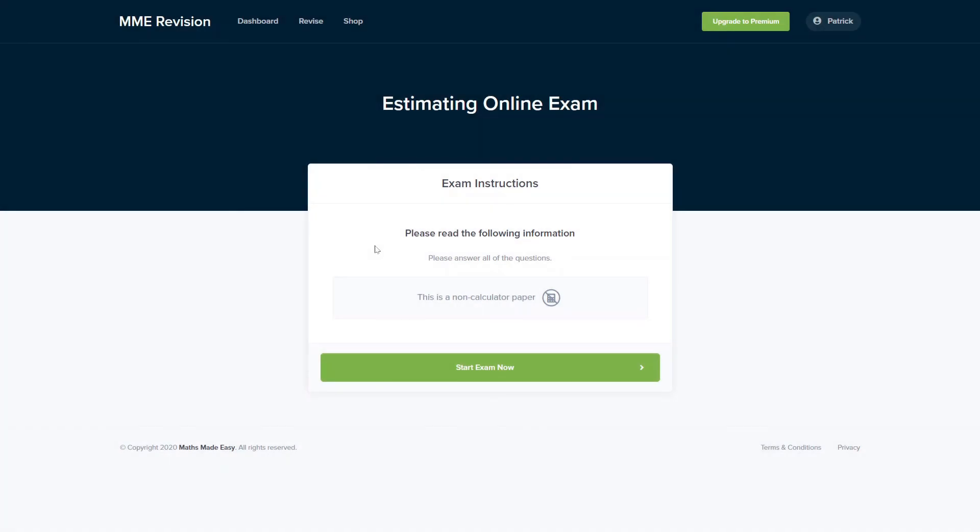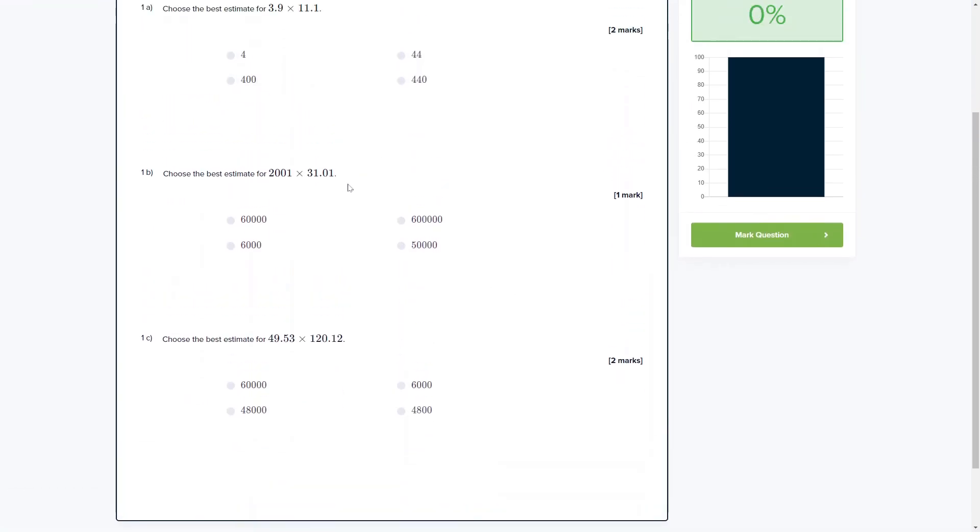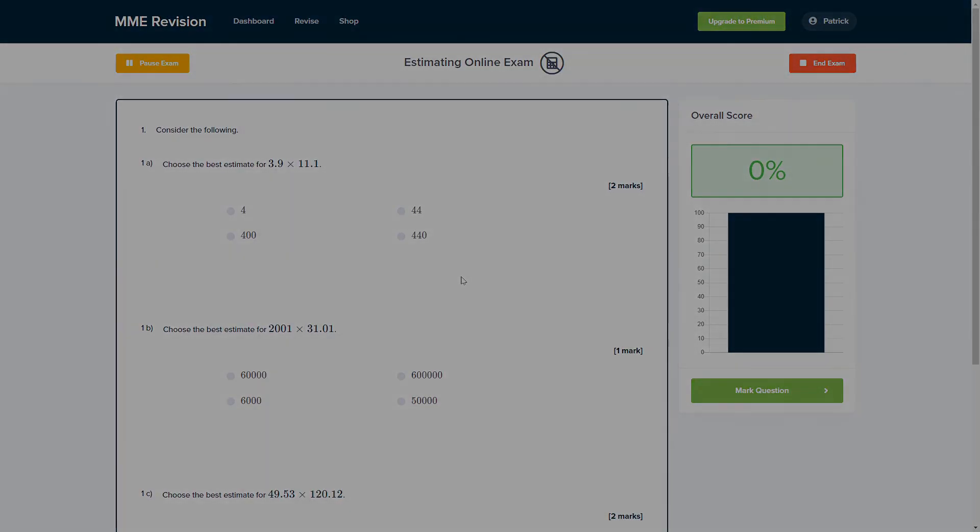If you're feeling good about estimation questions, you can practice them with our online exam. It's available through our revision platform and if you take the test you'll find loads of different questions to have a go at and you'll get instant feedback on everything. So it's a really good way of keeping track of where you're going wrong, how you can improve and so on. If you're interested you can take the test by clicking the link below.